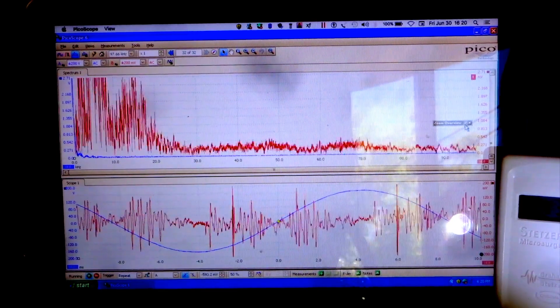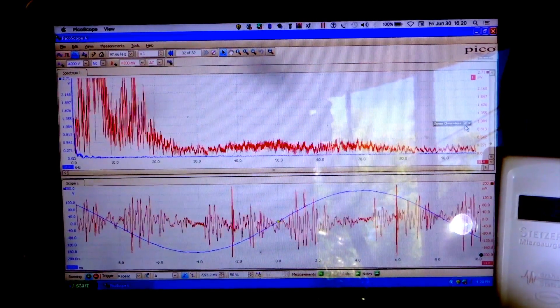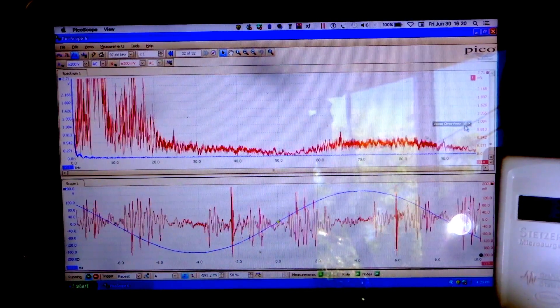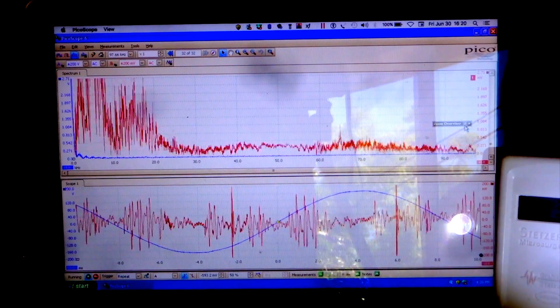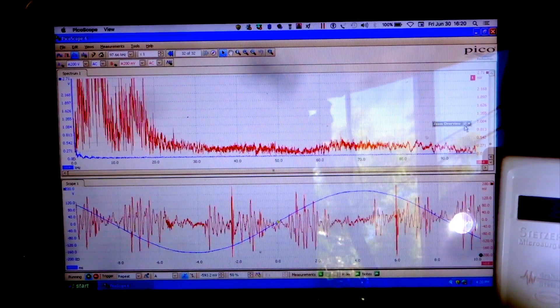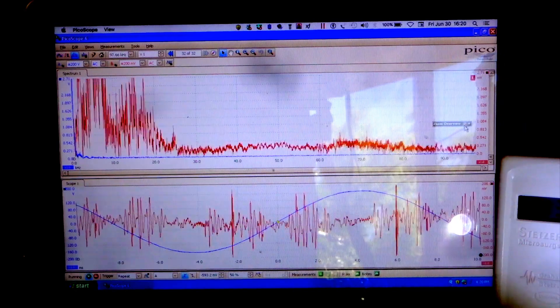We're tracing down the various sources of dirty electricity here at a house in the Coast Range. Some of it's indoors from light bulbs and dimmer switches. Some of it's coming in from the utility, and some of it's coming from the solar inverter on the solar system here.